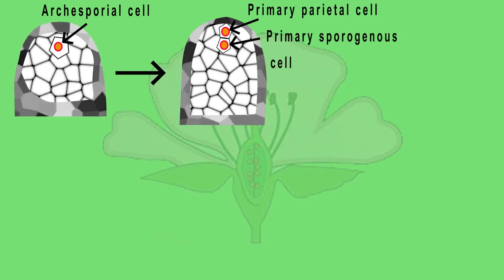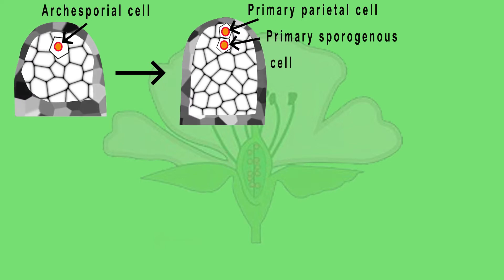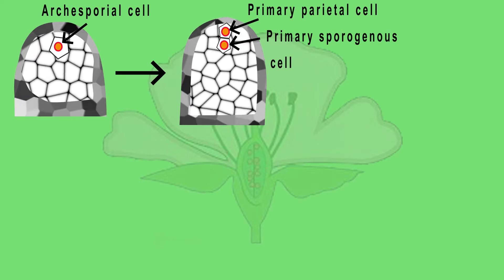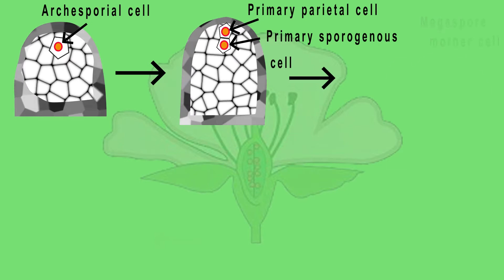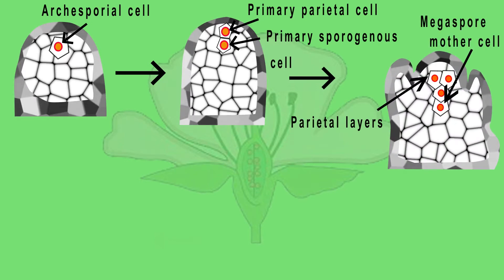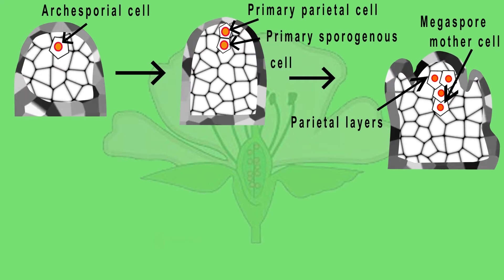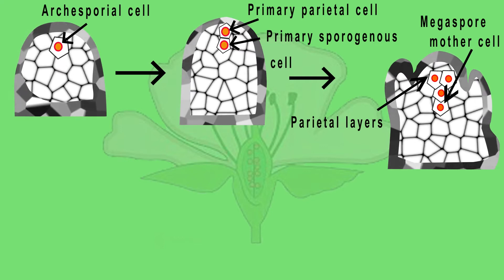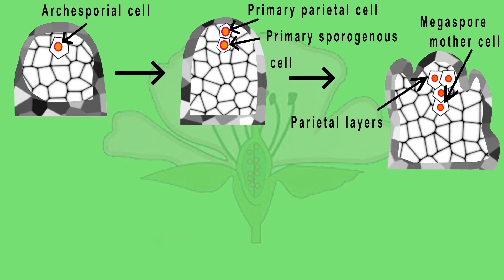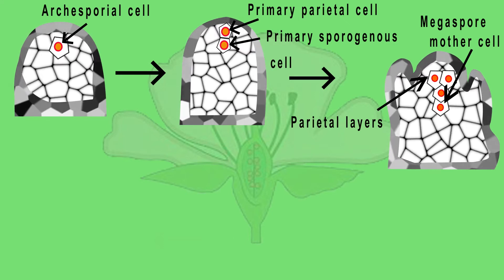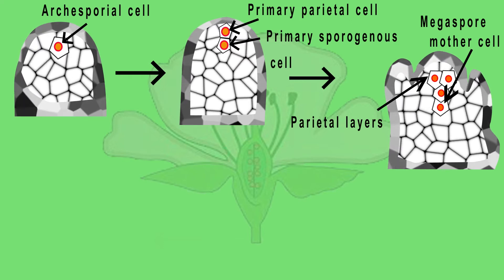In others, it may undergo a transverse division to form an outer primary parietal cell and an inner primary sporogenous cell. The parietal cell may remain undivided or divide by a few periclinal and anticlinal divisions to push the primary sporogenous cell deep into the nucellus. The primary sporogenous cell functions as the Megaspore mother cell.